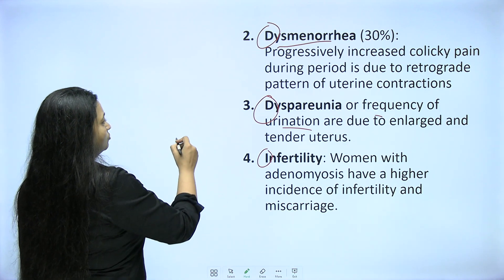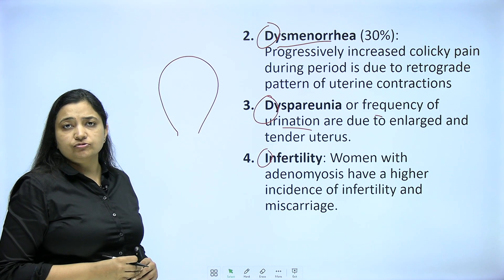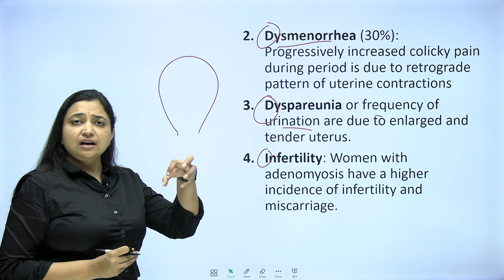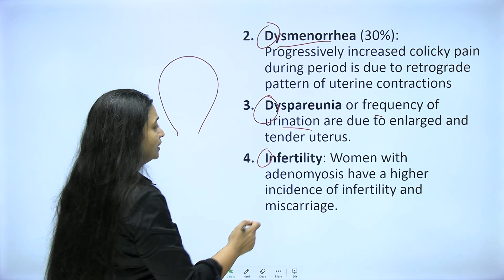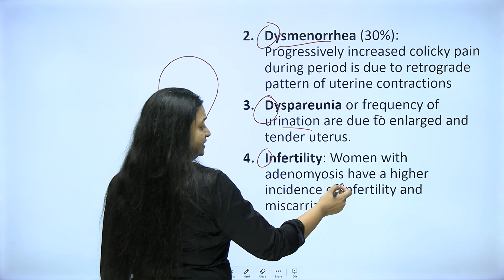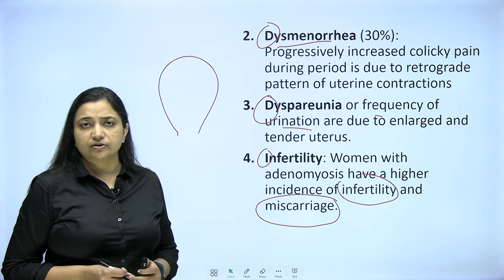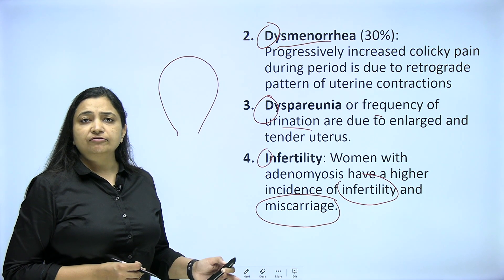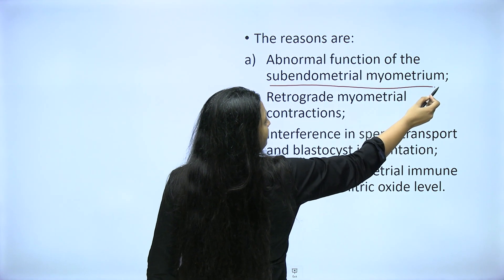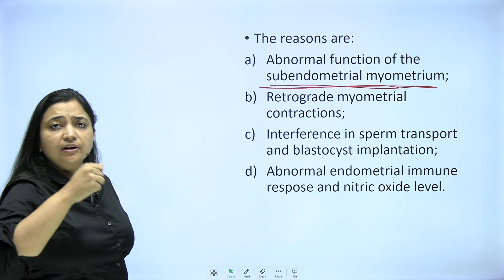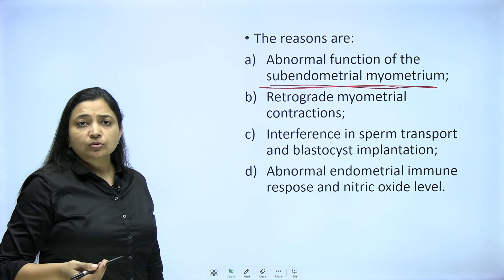Sometimes adenomyosis becomes so large that the uterus reaches at least 12 to 14 weeks pregnant size, and the whole pelvis is occupied by a big uterus. The patient has problems urinating and painful sexual intercourse. Regarding infertility, women with adenomyosis have a higher incidence of infertility and miscarriage due to irregular uterine contractions and the thickened myometrium. The patient may present initially with infertility or miscarriages. Abnormal function of the sub-endometrial myometrium leads to abnormal contractions, which may cause infertility and miscarriages.